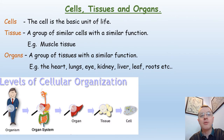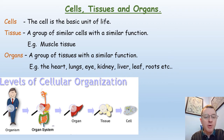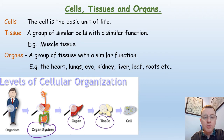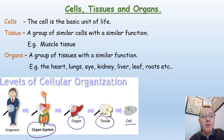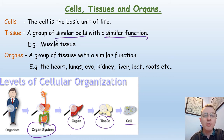We need to consider the makeup of multicellular organisms like animals and plants. The entire organism will be made up of organ systems, organs, and getting smaller, tissues, and eventually the cell. You need to be aware of the definitions of those key terms. The cell is a basic unit of life. A tissue is a group of similar cells with a similar function — for example, muscle tissue. And an organ is a group of tissues with similar functions.